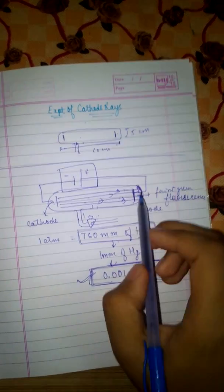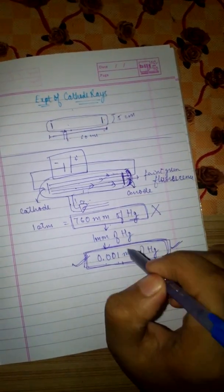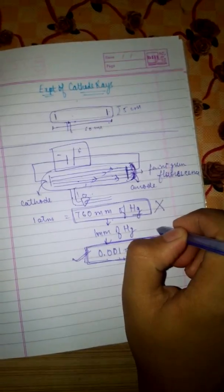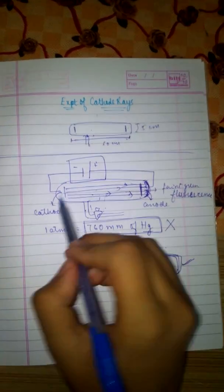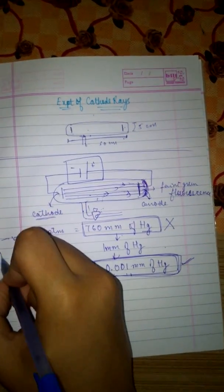So this was the experiment conducted by J.J. Thompson which had proved that cathode rays are negatively charged and they travel in a straight line.